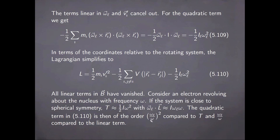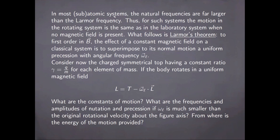The reason why these orders of magnitude are relevant is due to the fact that in general subatomic systems, the natural frequencies of the motion are far larger than the Larmor frequency. So for such systems, the motion in the rotating system is the same as in the laboratory system when no magnetic field is present. And this is known as Larmor's theorem: namely that to first order in the magnetic induction, the effect of a constant magnetic field on a classical system is to superimpose on its normal motion a uniform precession with angular frequency omega_L, the Larmor frequency.